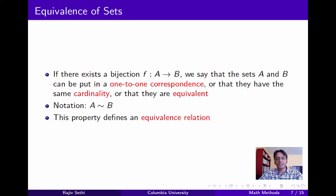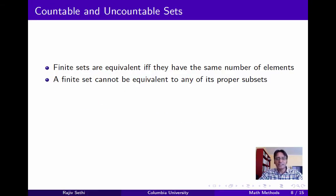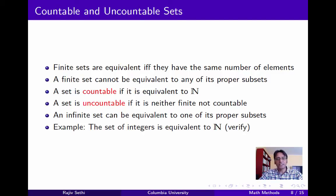Now we can use the notion of a bijection to think about the cardinality or size of sets. If there exists a bijection F from A to B, we say that the sets A and B can be put into a one-to-one correspondence, or that they have the same cardinality, or that they're equivalent. You should verify that having the same cardinality defines an equivalence relation. It's clear that finite sets can be equivalent if and only if they have the same number of elements, so a finite set can't be equivalent to any of its proper subsets.